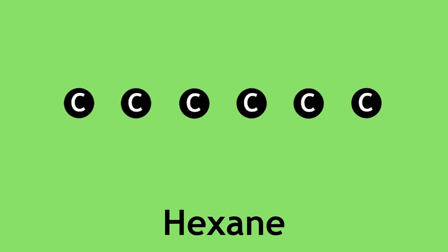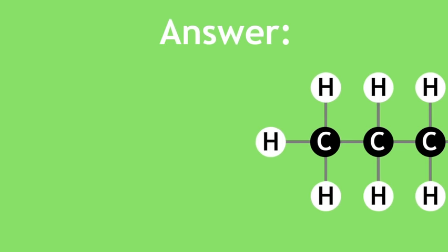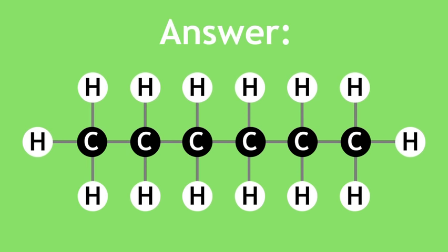Pause this video now and try to draw the structure of hexane. Hexane has six carbon atoms. Here is the structure of hexane. Compare it to the structure you drew. Did you get it right?